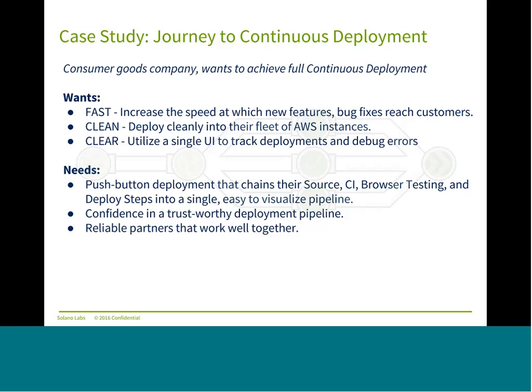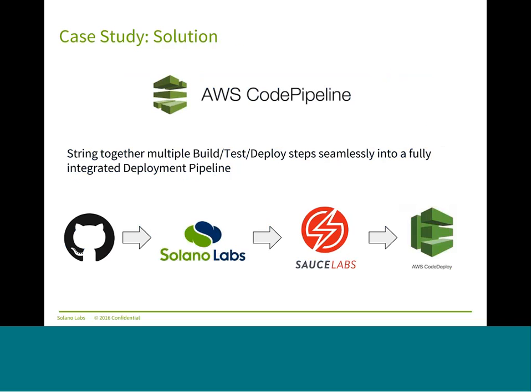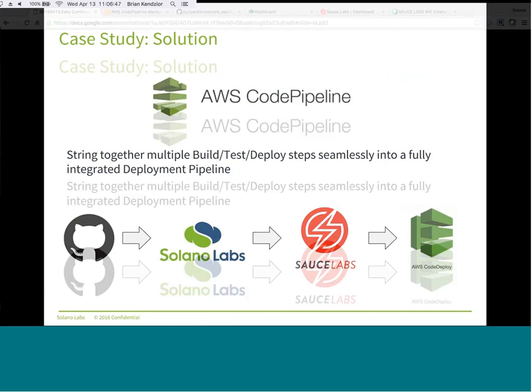The other thing that's important in the continuous deployment pipeline is being able to test for all of your different users. For an e-commerce company, you need to serve a grandmother in the Midwest using a really old version of Internet Explorer, and also someone in tech in San Francisco with the latest Chrome browser. Being able to do CI on unit testing but also do browser testing across all the different browsers is extremely important. The solution — AWS CodePipeline — is a tool that allows you to string together multiple different steps into a seamless, fully integrated deployment pipeline. For this solution, we're using GitHub, Solano Labs for unit testing, Sauce Labs for functional testing, and AWS CodeDeploy for the actual deployment. And here is a pre-baked pipeline — click one button, release change, and the pipeline has started.